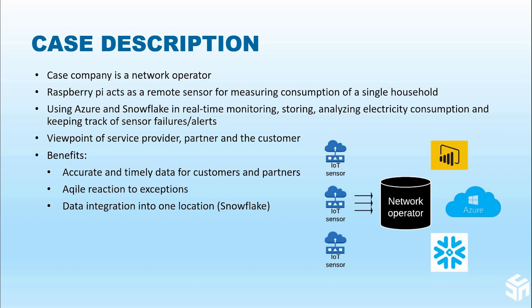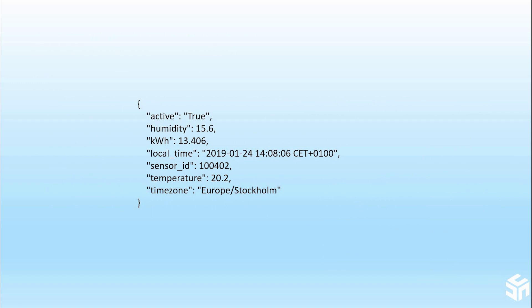The case in this demo is that we have a company that is a network operator with multiple sensors around the world. They are measuring electricity consumption, temperature, humidity, and so forth. We're using Azure and Snowflake for real-time monitoring, storing and analyzing the data, and keeping track of sensor failures and alerts. The sensors are sending small JSON-formatted telemetry — there are 20 sensors and each sensor sends four telemetries per minute.